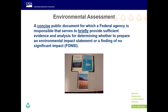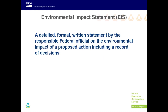An environmental assessment, or EA, is a concise public document for which a federal agency is responsible that serves to briefly provide sufficient evidence and analysis for determining whether to prepare an environmental impact statement or a finding of no significant impact, or FONSI. An environmental impact statement, or EIS, is a detailed, formal, written statement by the responsible federal official on the environmental impact of a proposed action, including a record of decisions. If an EA is concise and an EIS is detailed, what does that say about the time required to do an environmental impact statement?